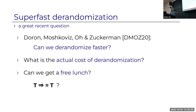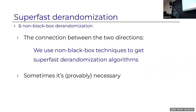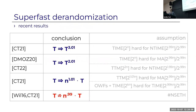It sounds crazy, but if you go back to the original BPP paper from 1977, there's an anecdote: the first paper that defined BPP raised a conjecture stronger than what we think is achievable today. So can we derandomize without pain? I talked about non-black-box derandomization; the connection to super-fast derandomization is that we'll use non-black-box techniques to get these super-fast algorithms. In many cases it's necessary—you can prove that no PRG can get the results you can get without PRGs.